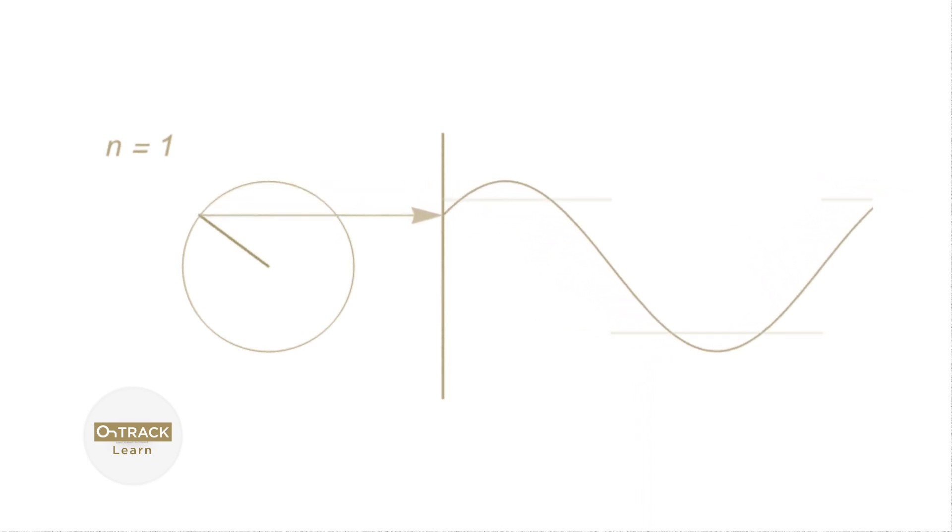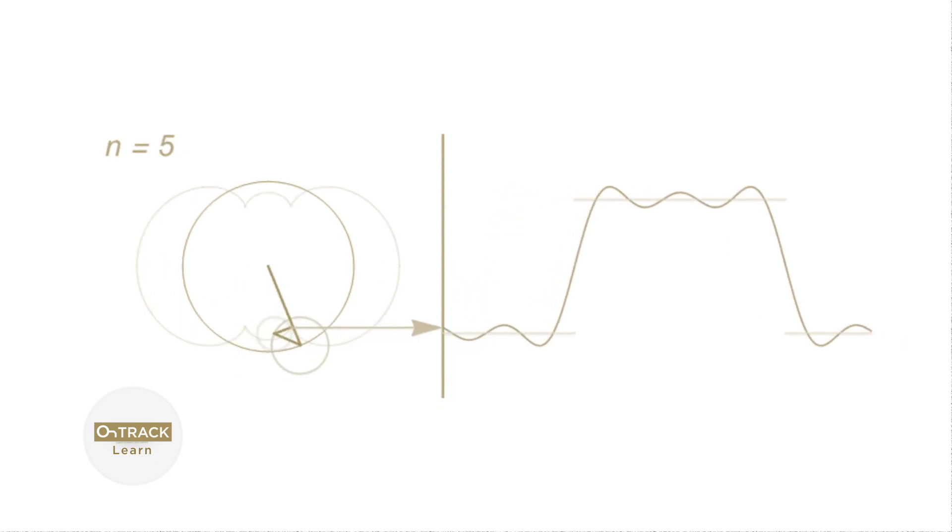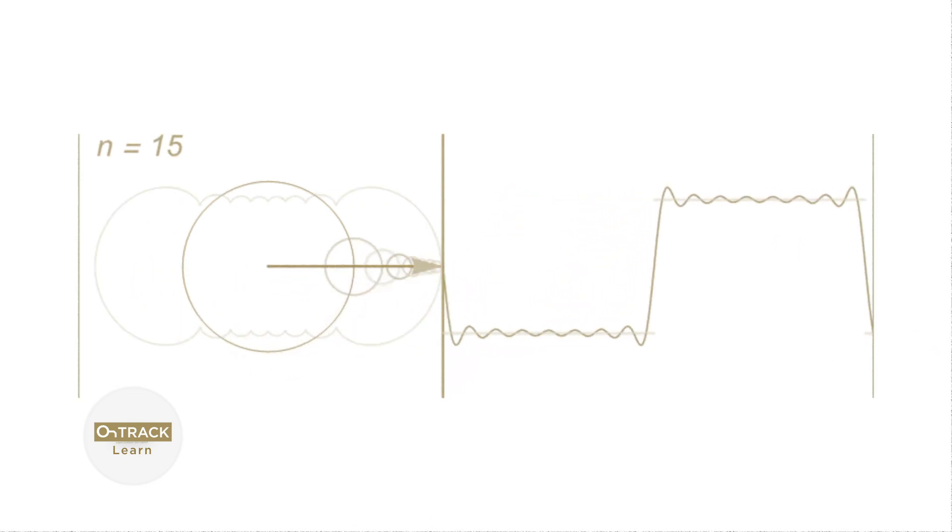Take a look at this animation here of this Fourier series. At first, it looks like a sine wave. But as we increase in order, it looks more and more like a square wave. And as we go higher in order, we go higher in frequency.